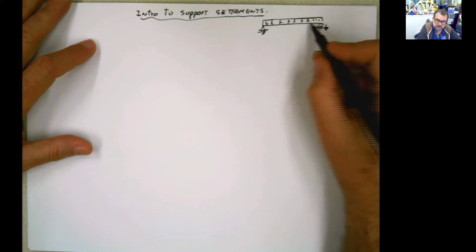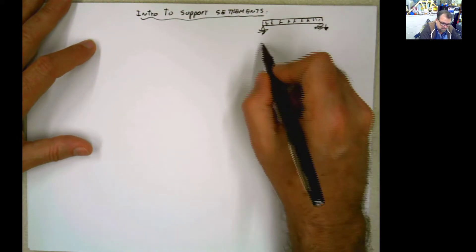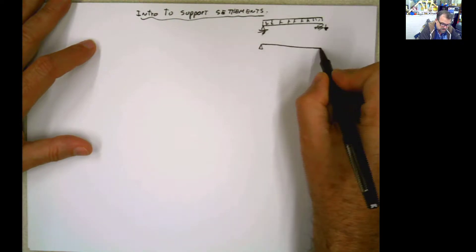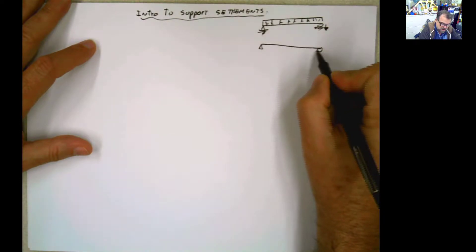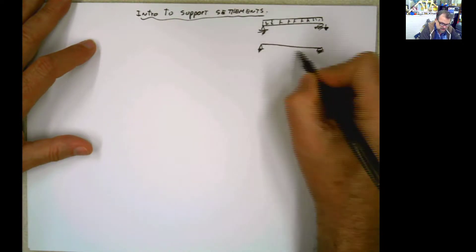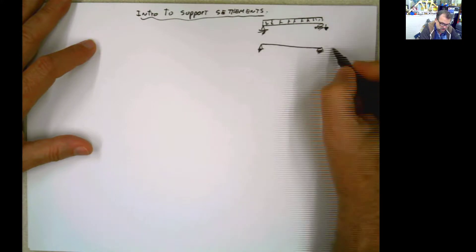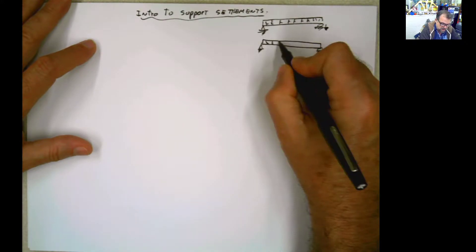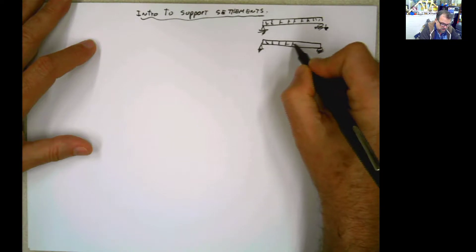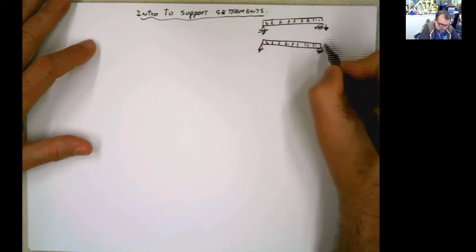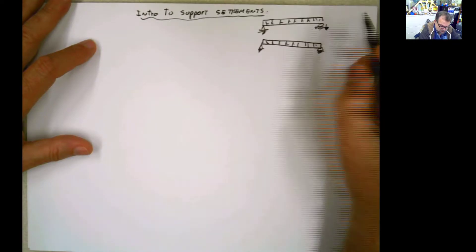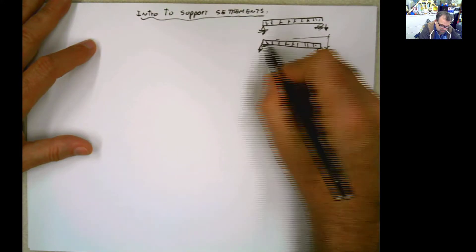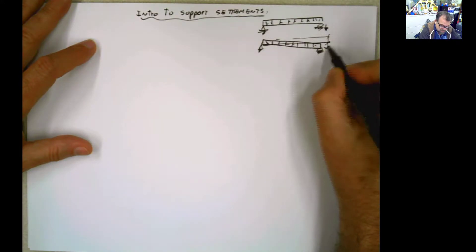If the structure is statically determinate, actually nothing is going to happen. This thing is going to act and come like that — this support is going to stay, the other support is going to stay, and the whole structure is going to move by whatever amount it originally settled here.